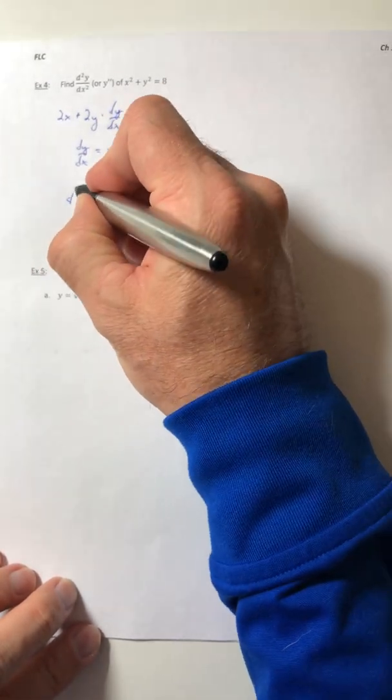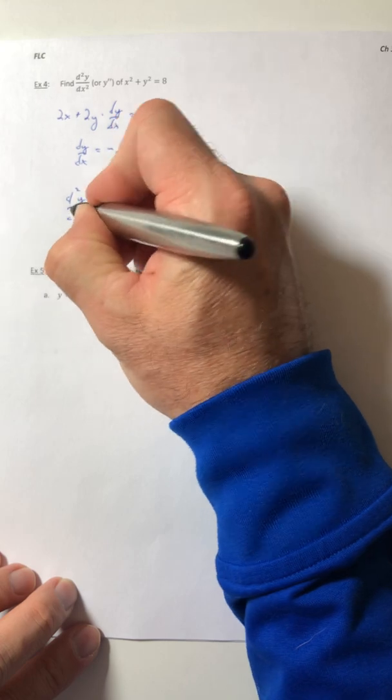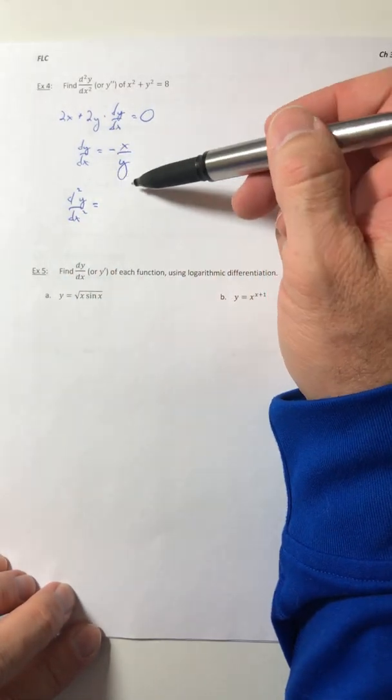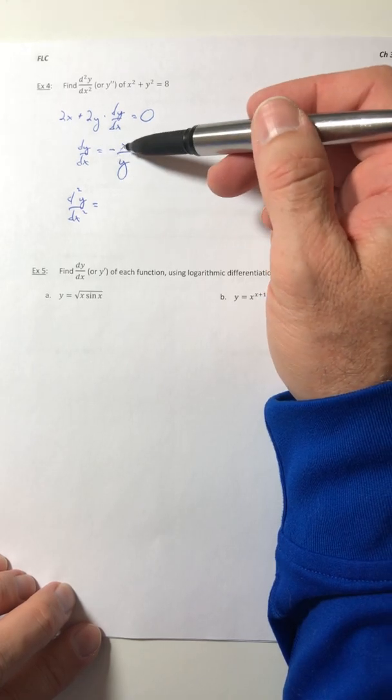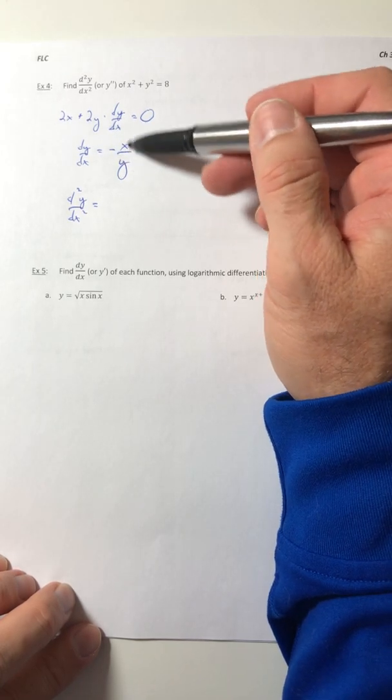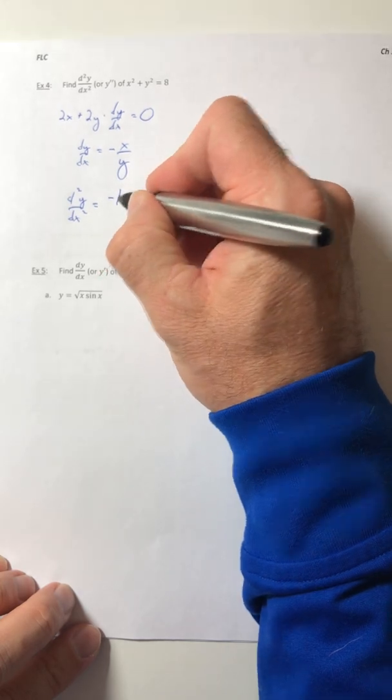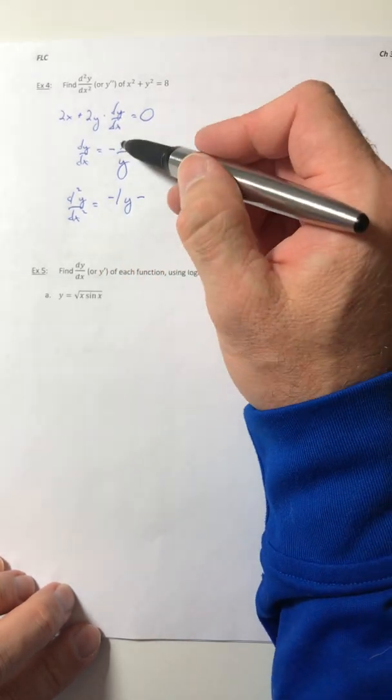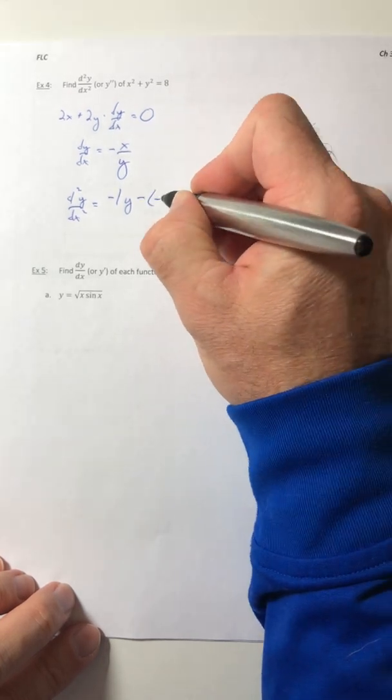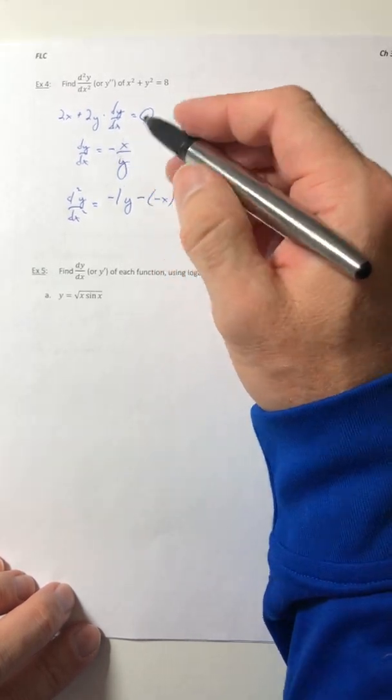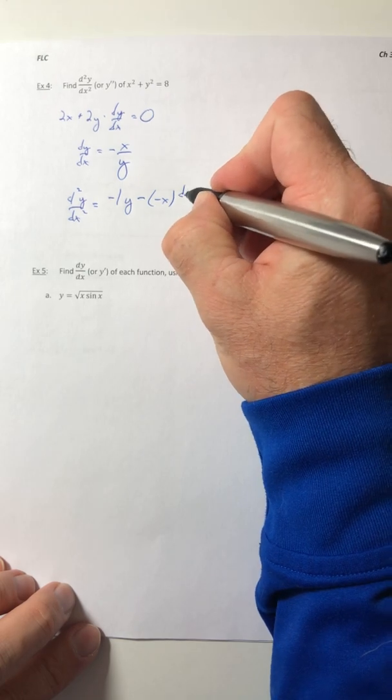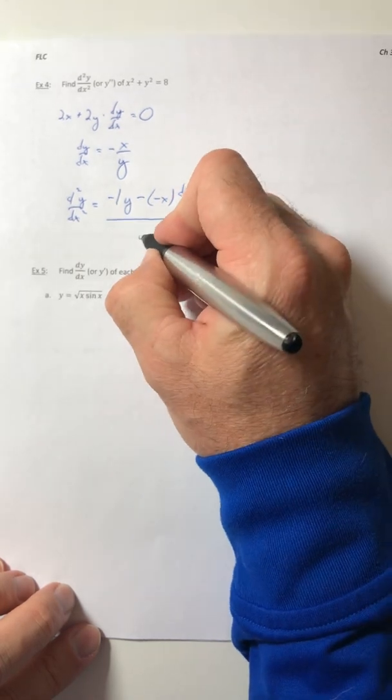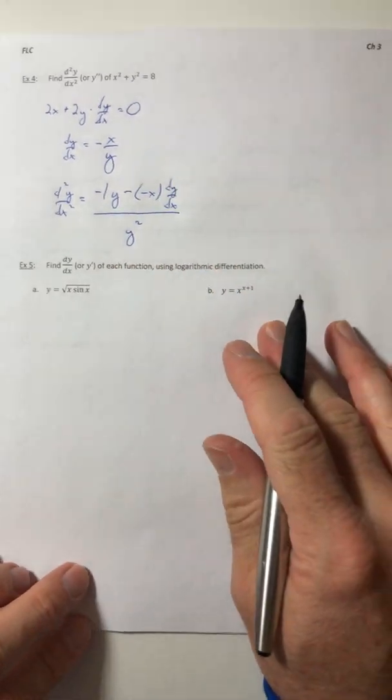So now I can get the second derivative by, you guessed it, we got to use the quotient rule because we have a quotient. So the derivative of the top is the negative 1 times the bottom and then minus the top times the derivative of the denominator, which would be dy dx, all over y squared.